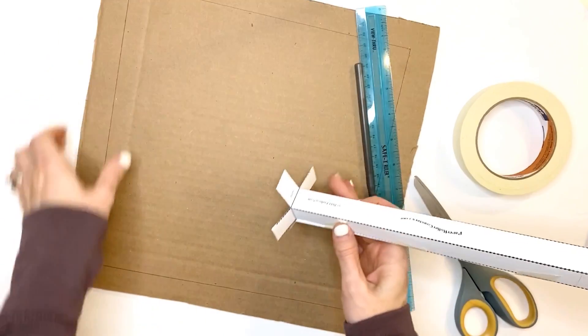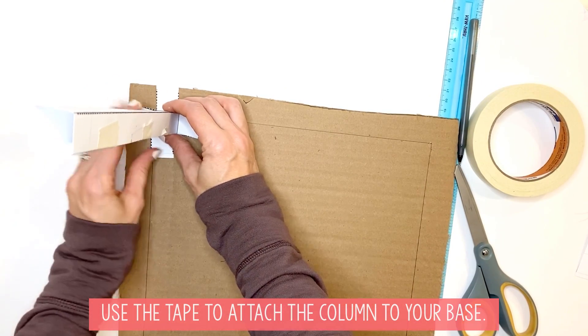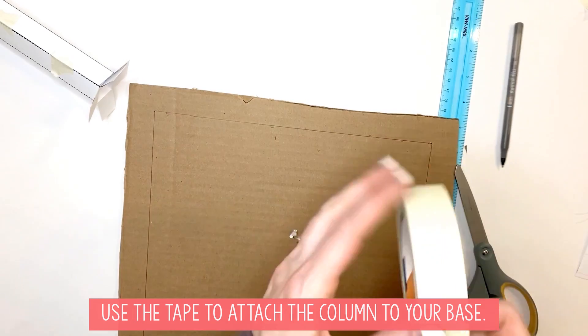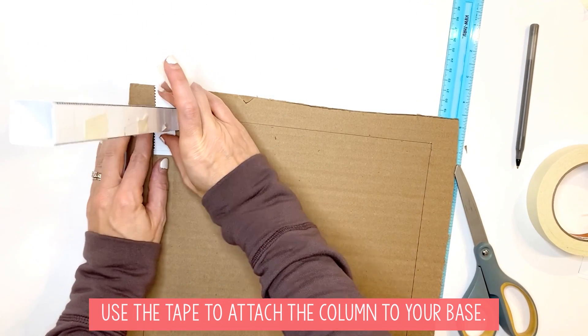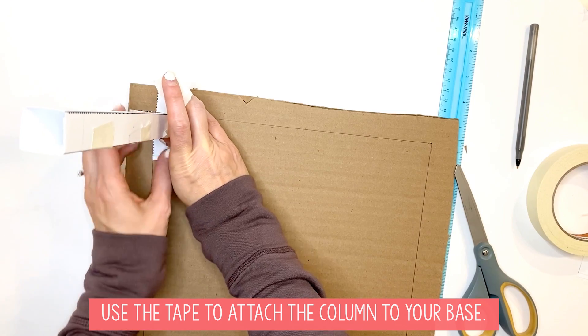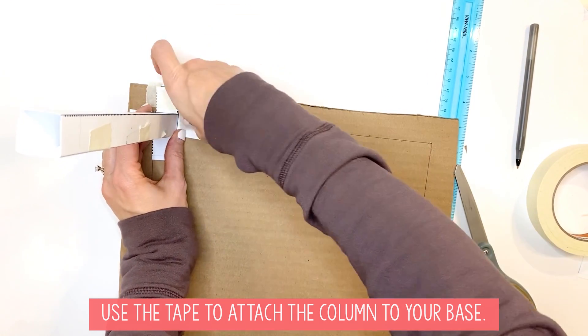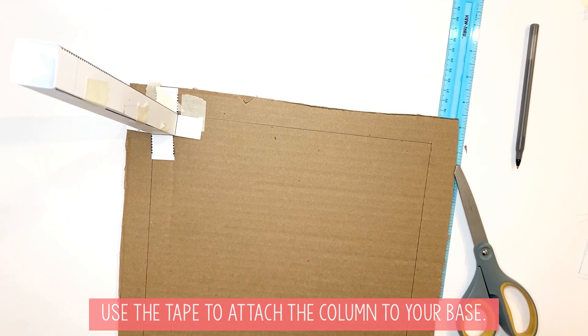When you have one column done, you're going to put it over here in the corner of your cardboard base just like that. You're going to want your flaps on the border—that one-inch border that you created—and then you want to tape this down nice and firmly so that...